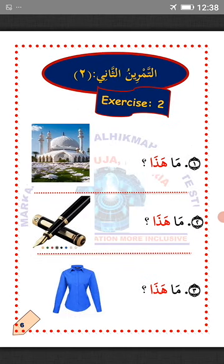At-tamrinu al-thani — the second exercise. Number 1: Mahatha — what is this? So how do you say 'this is a mosque' in Arabic? Number 2: Mahatha — what is this? So how do you say 'this is a pen' in Arabic? Number 3: Mahatha — what is this? So how do you say 'this is a shirt' in Arabic?